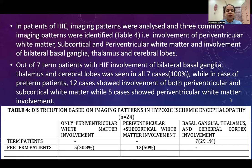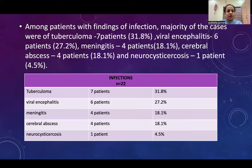While in cases of preterm birth, 12 cases showed involvement of both periventricular and subcortical white matter, while 5 cases showed periventricular white matter involvement only.